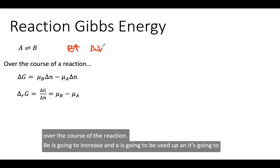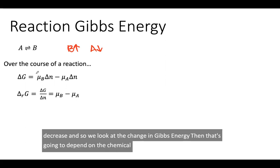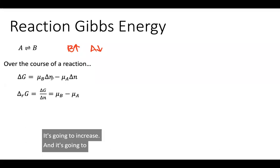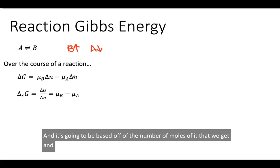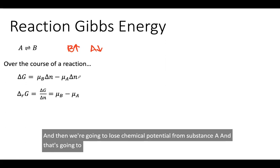If we look at the change in Gibbs energy, that's going to depend on the chemical potential of substance B. And since we're getting more of it, it's going to increase, and it's going to be based off of the number of moles of it that we get. And then we're going to lose chemical potential from substance A, and that's going to be depending on the number of moles of that that we lose.